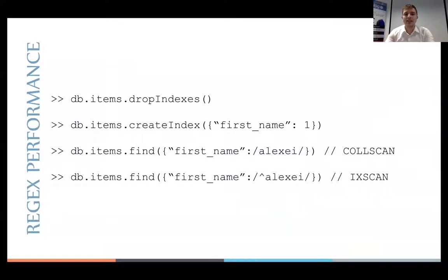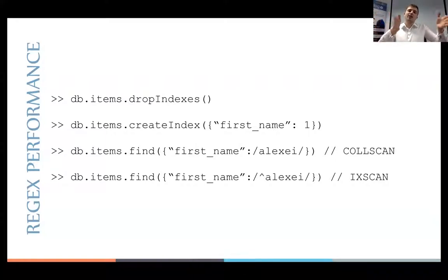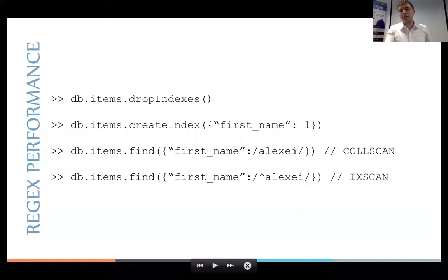For regular expressions, there is a rule for index usage: you should make the regex prefixed — starting with a caret symbol at the beginning — or suffixed with a dollar sign at the end. This way, the index will be used via an index scan. If the pattern is somewhere in the middle of the string, it will fall back to a collection scan. So prefix your regex and the index will be used.